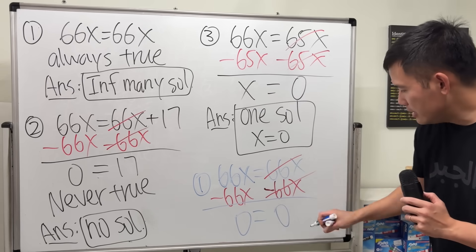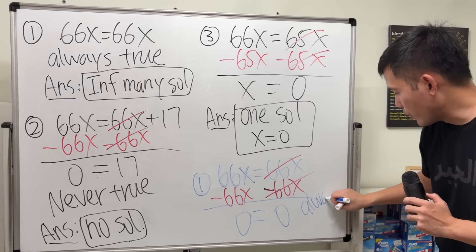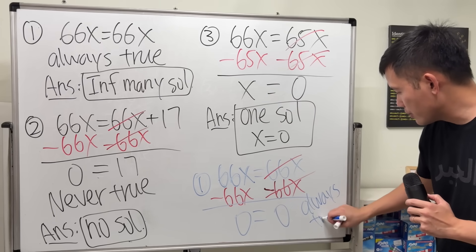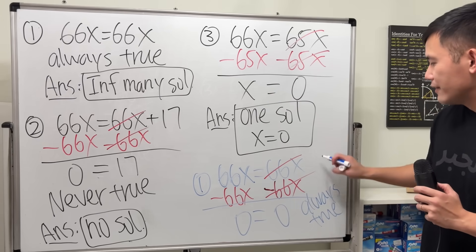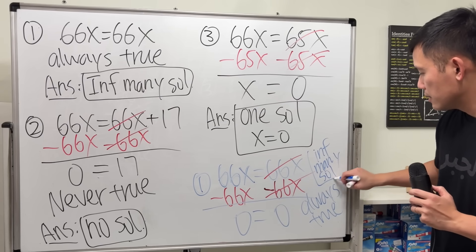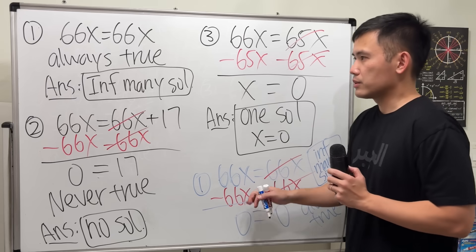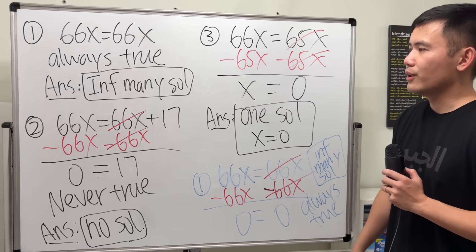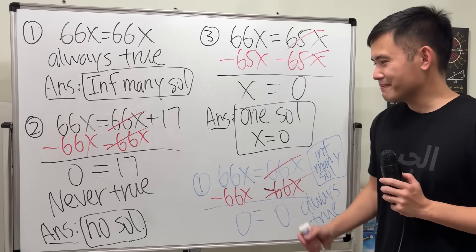0 equals 0. This, again, is always true. Therefore we have infinitely many solutions. That's if you wanted to actually do some work, but you don't have to at all. Alright, that's it.